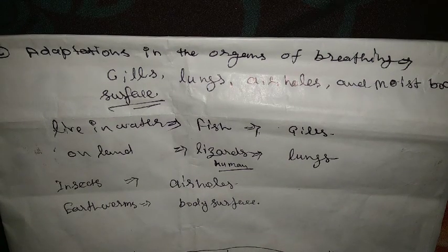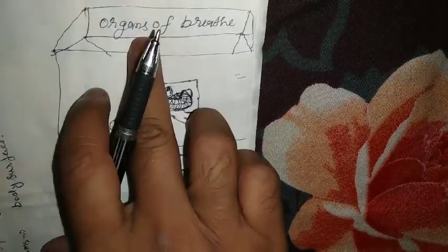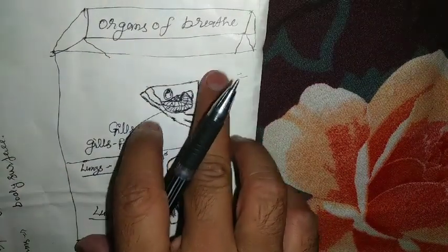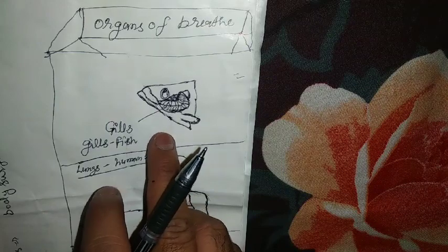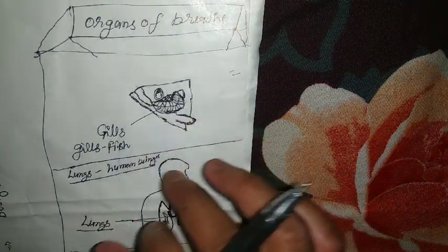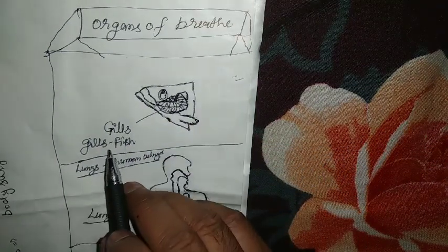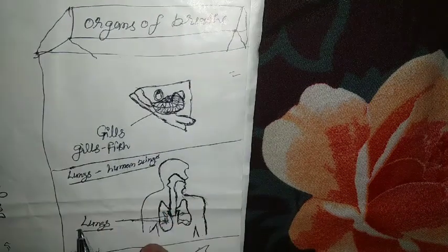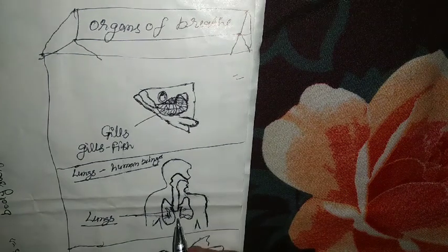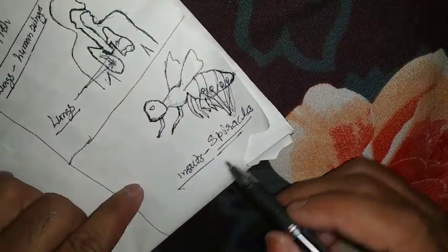Now let's try to understand the organs of breathing again. Fish breathe through gills. Human beings breathe through lungs. Insects breathe through spiracles, which are the organs of breathing for insects.